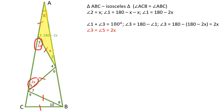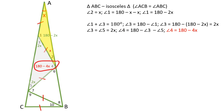Angle 3 and angle 5 are both equal to 2X because the gray triangle is an isosceles triangle. Therefore, angle 4 is equal to 180 minus angle 3 and minus angle 5, which is equal to 180 minus 4X.